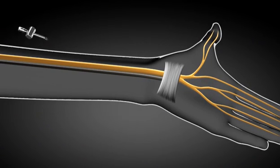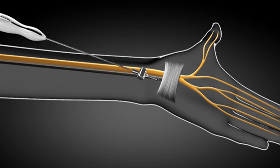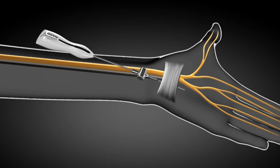Next, the access cannula assembly is advanced into the entry point and the stylet is removed. The Manos carpal tunnel release blade assembly should then be inserted into the access cannula and directed towards the palmar exit point.